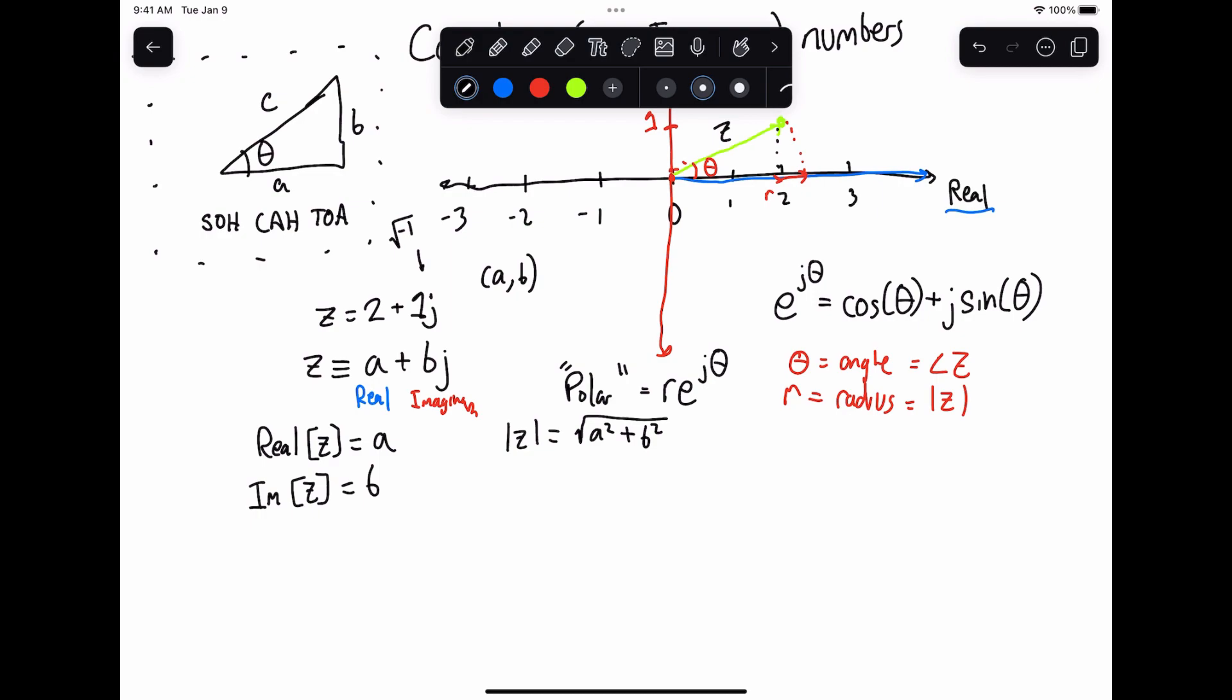And if we look here at our angle, to get this angle, one thing we can do is we want to use, if you remember Sokotoa, the tangent. So the tangent of theta is equal to the opposite over the adjacent. So this is going to equal b over a. So if I want to get theta, theta is just going to equal the arc tangent or tan inverse of b over a. That's how you can get your angle. So this is how you move from something in Cartesian to polar. You basically say square root of a squared plus b squared times e to the j tan inverse or arc tangent of b over a. Pretty simple.